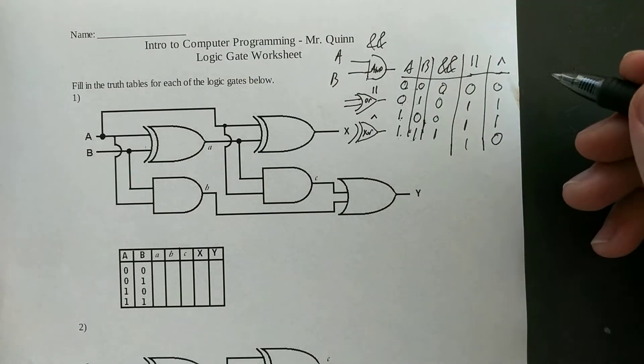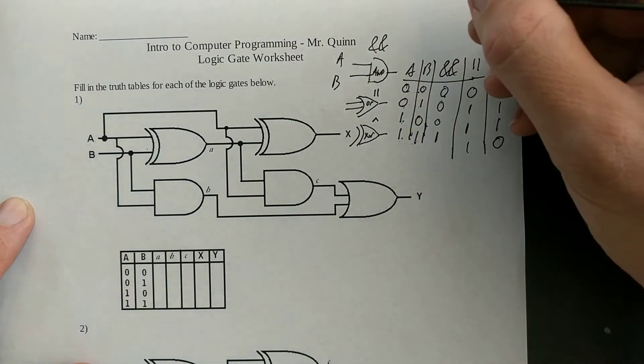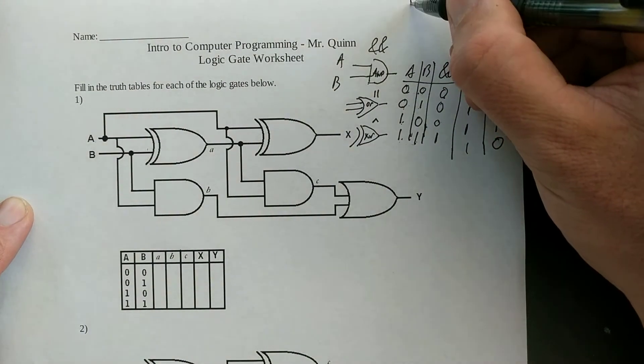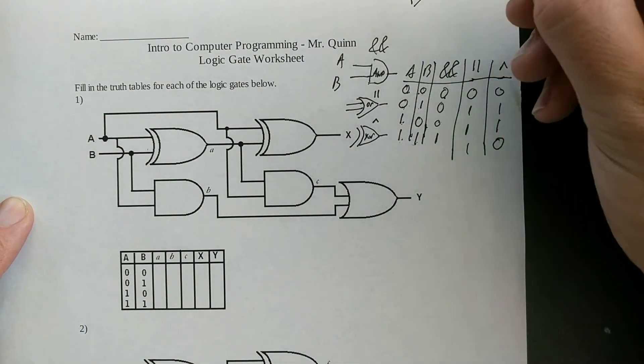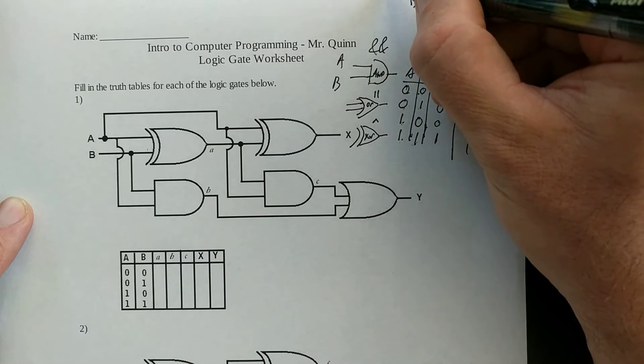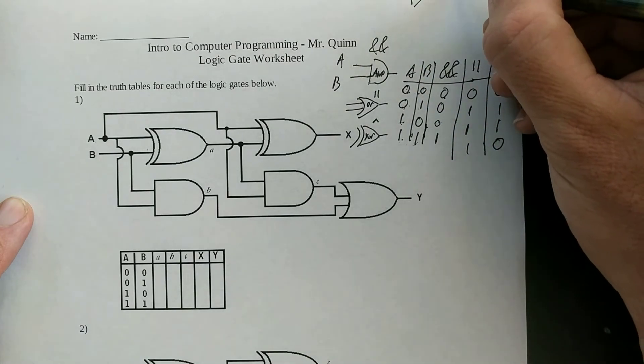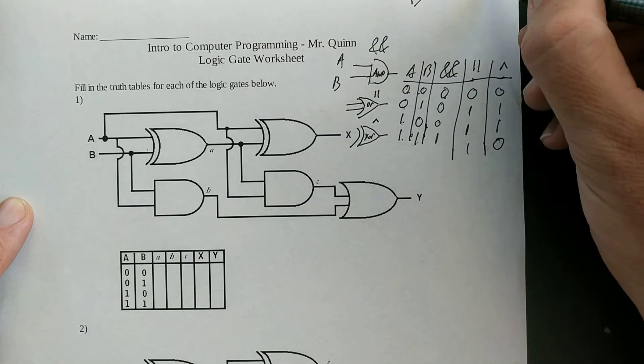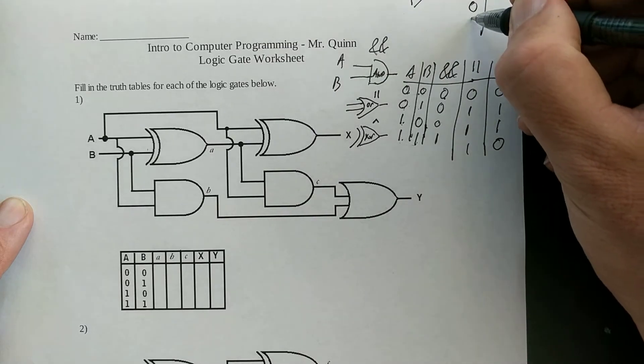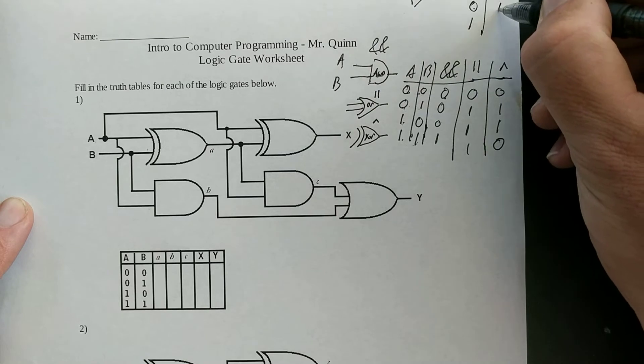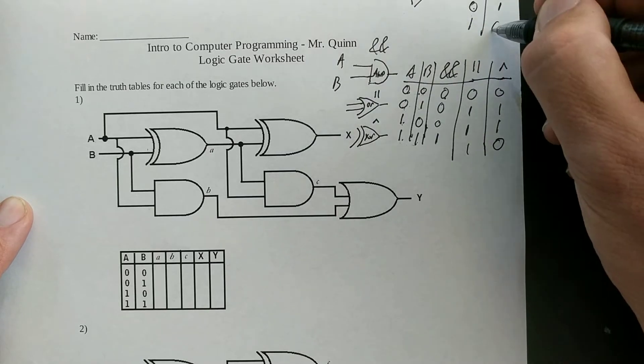Now the interesting thing with all of these is there's this other gate called a NOT gate that just inverts the input. So if I have A going in, I have NOT A coming out. And I'm just going to make a separate little truth table over here for that. So if A is a zero, NOT A is a one. If A is a one, NOT A is a zero.